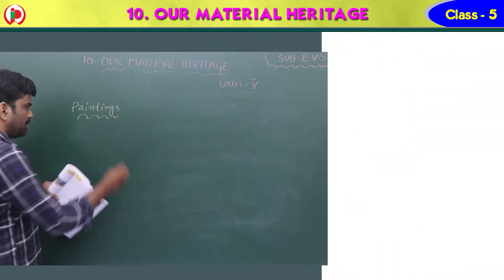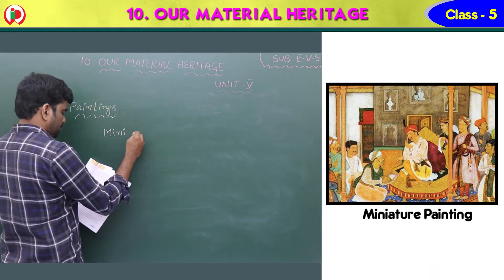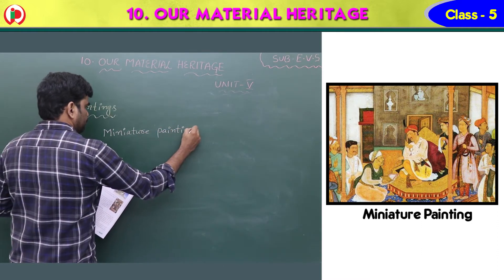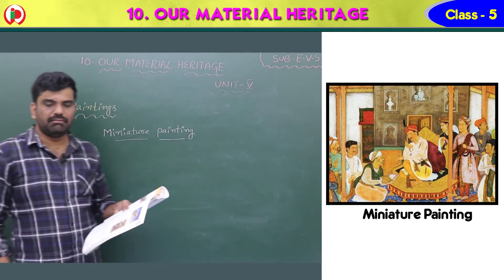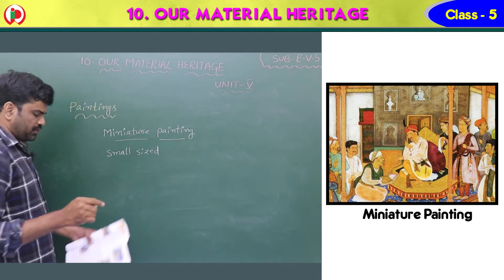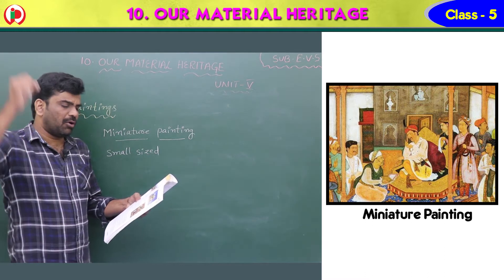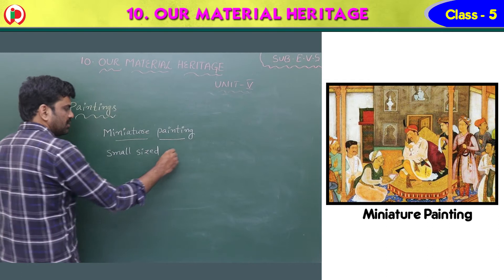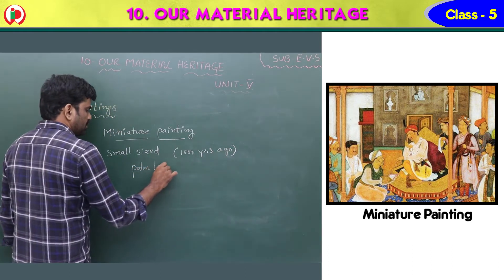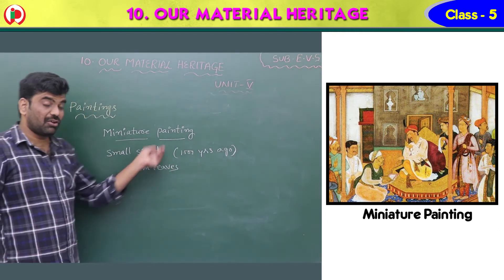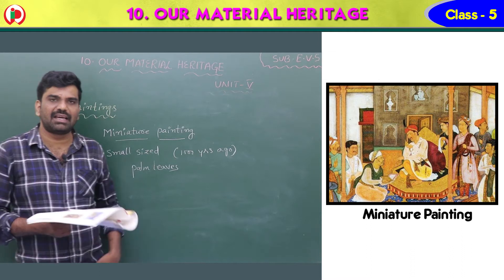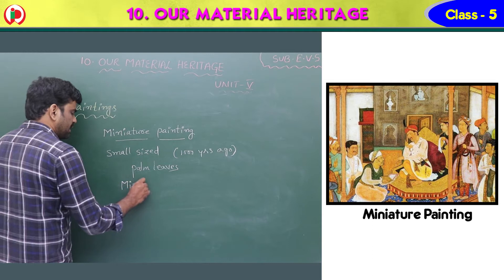The first one is miniature painting. 'Mini' means small, so miniature means small-sized. Small-sized or miniature paintings were made in India about a thousand years ago on palm leaves. On the palm leaves, a thousand years ago, these small-sized paintings were there.